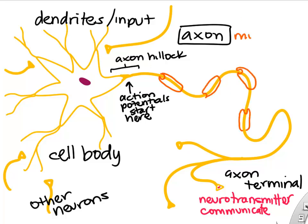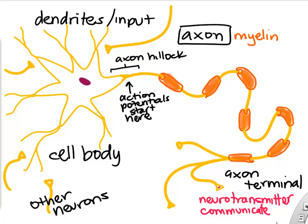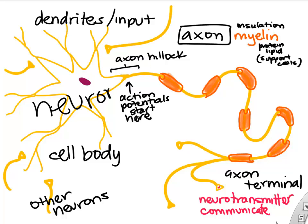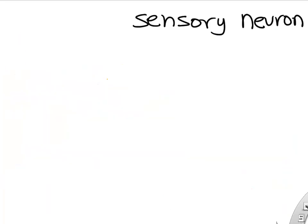Sometimes axons are insulated with a protein-lipid substance called myelin. Myelin insulates the axon and helps the action potential spread fast.